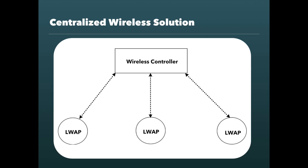The best way to explain what SDN is exactly is to provide a practical example of how software defined networking works. The best example to illustrate this is with a centralized wireless solution, which is commonly used in all business networks today. In a centralized wireless solution, you will have several lightweight access points spread out across your network. These are considered dumb or unintelligent access points, which means they need instructions — basically a configuration — for what they need to do.